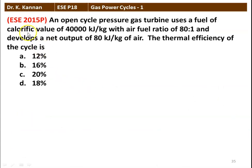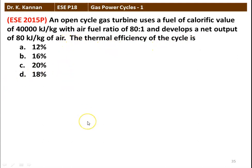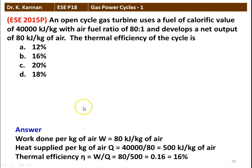The next question from the 2015 question paper: an open cycle gas turbine uses a fuel of calorific value 40,000 kJ per kg with an air-fuel ratio of 80:1 and develops a net work output of 80 kJ per kg of air. The thermal efficiency of the cycle — there are four options: 12%, 16%, 20%, and 18%.